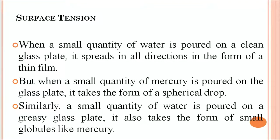Now let me tell you about surface tension. When a small quantity of water is poured on a clean glass plate, it spreads in all directions in the form of a thin film. But when a small quantity of mercury is poured on the glass plate, it takes the form of a spherical drop. You may not have seen mercury directly, but when a thermometer breaks, mercury comes out and it is very difficult to pick up those mercury droplets — they are always in a spherical drop form.